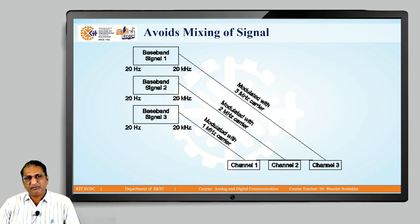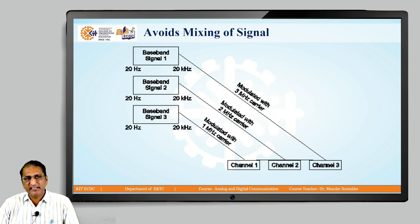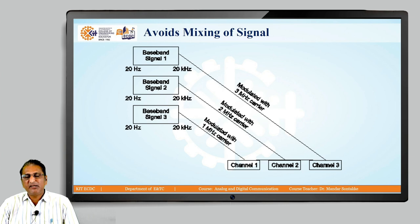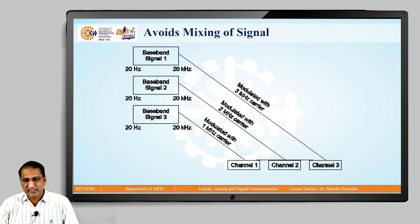To illustrate avoiding signal mixing: Channel 1, 2, and 3 each have baseband signals from 20 Hz to 20 kHz. Without modulation, all three mix together. With modulation, baseband signal 1 is modulated with a 3 MHz carrier, signal 2 with a 2 MHz carrier, and signal 3 with a 1 MHz carrier — using separate carriers to avoid mixing.